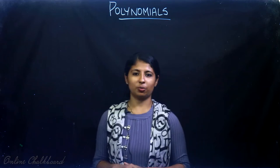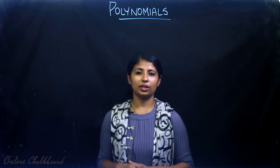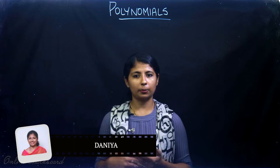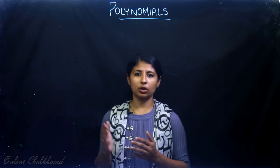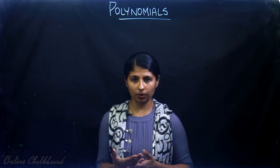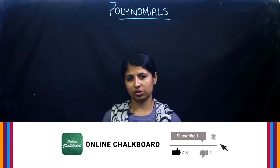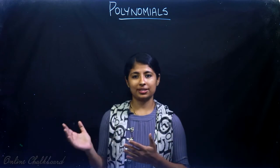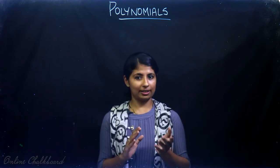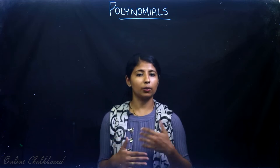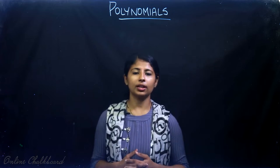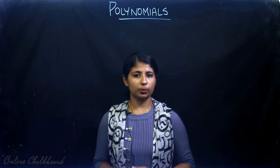Hello friends, welcome back to Online Chalkboard. Today we are starting with chapter 2 of class 10 — polynomials. In this chapter we will be revising what we learned in class 9, learning about the zeros of polynomials, the relation between coefficients of polynomials, how zeros can be represented geometrically, and the divisional algorithm from the previous chapter applied to polynomials.